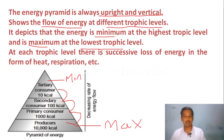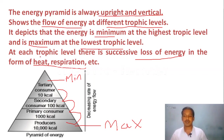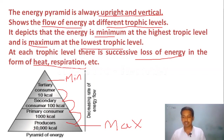At each trophic level, there is successive loss of energy in the form of heat and respiration. At the lowest trophic level (producers), the energy is 10,000 kcal. As we move to the next trophic levels, the energy is decreasing.